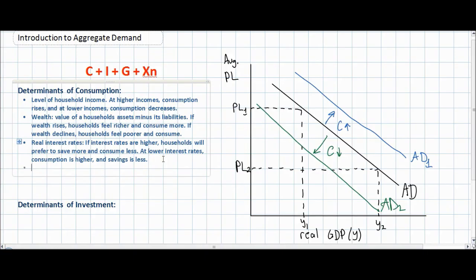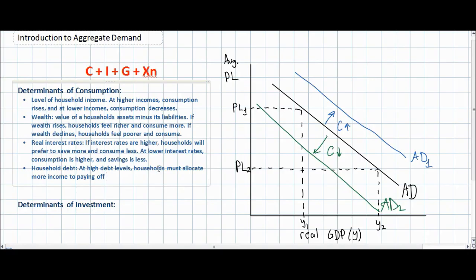The fourth determinant is household debt, which refers to the amount of money households owe from previous consumption — such as credit card debt, student loan debt, or mortgage debt. At high debt levels, households must allocate more income to paying off debts, therefore consumption falls. If households have high levels of debt, there will be a lower level of consumption and aggregate demand will decrease.